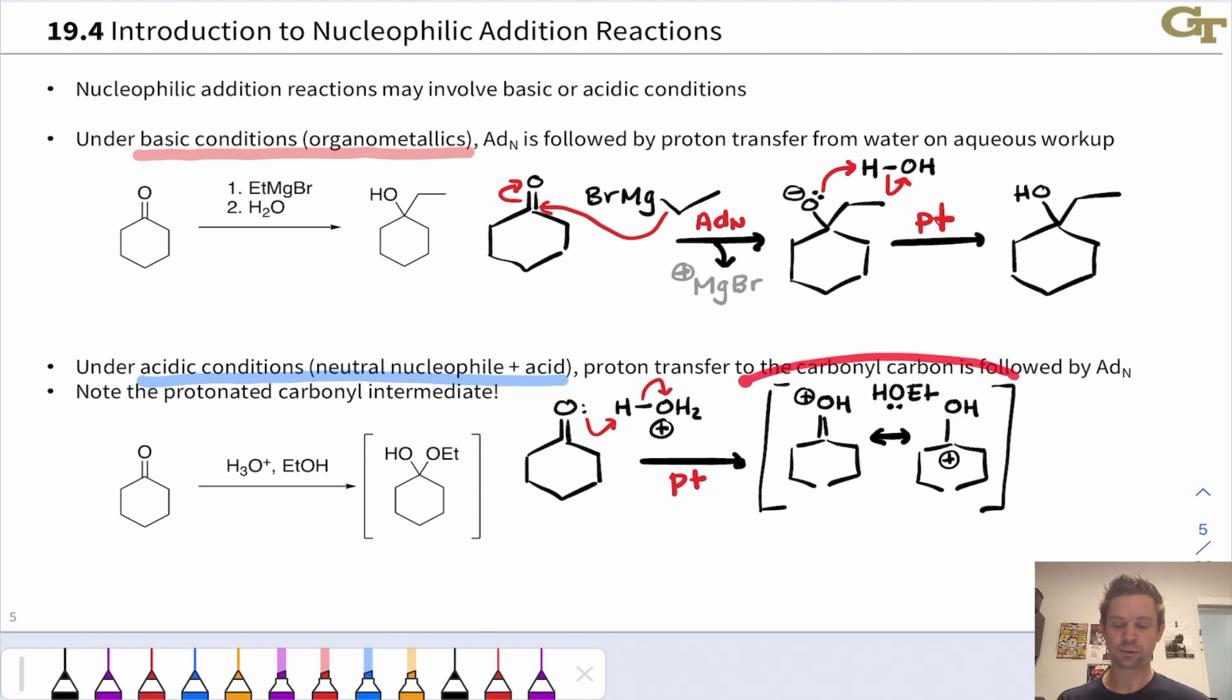We end up at this very important reactive intermediate, protonated carbonyl. This has two resonance forms, one with positive charge on oxygen and one with positive charge on carbon. This second resonance form really emphasizes that this carbon is now a great electrophile.